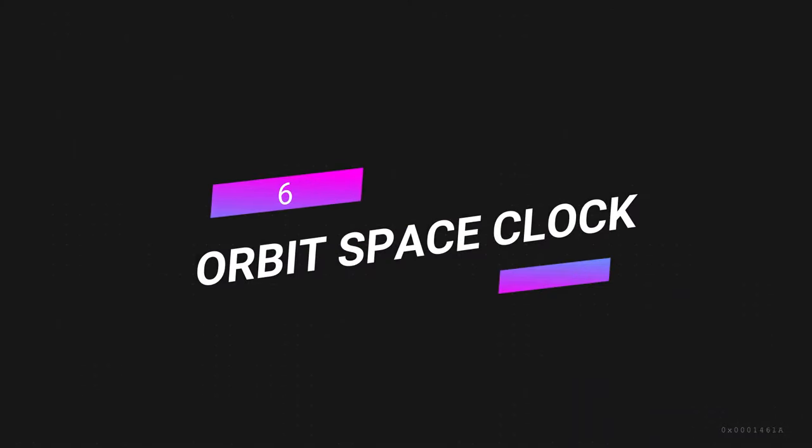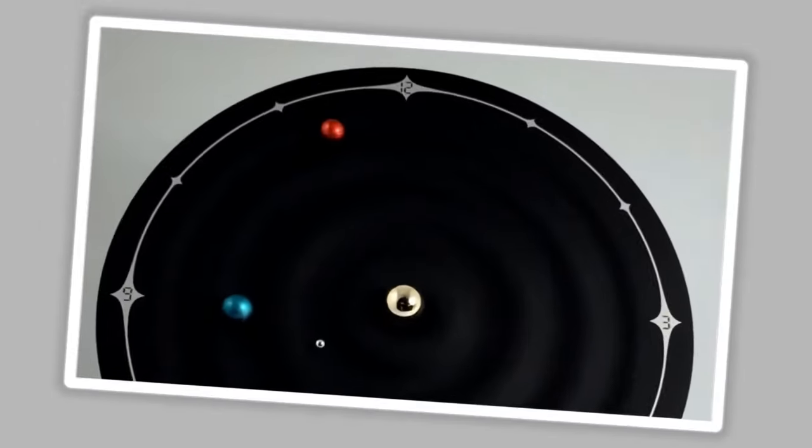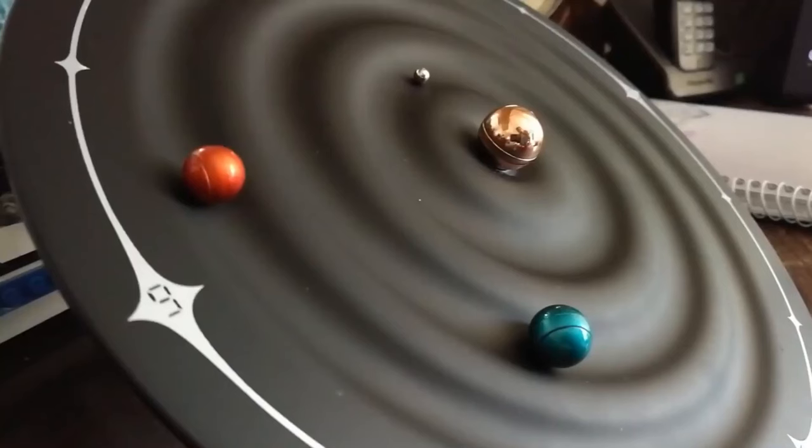Number 6. Orbit Space Clock. This is the Orbit Space Clock, a captivating timepiece that transcends ordinary clocks. This revolutionary design brings the universe right into your living room. It has the appearance of a small galaxy with swirling nebulae and stars that move gently as time passes.